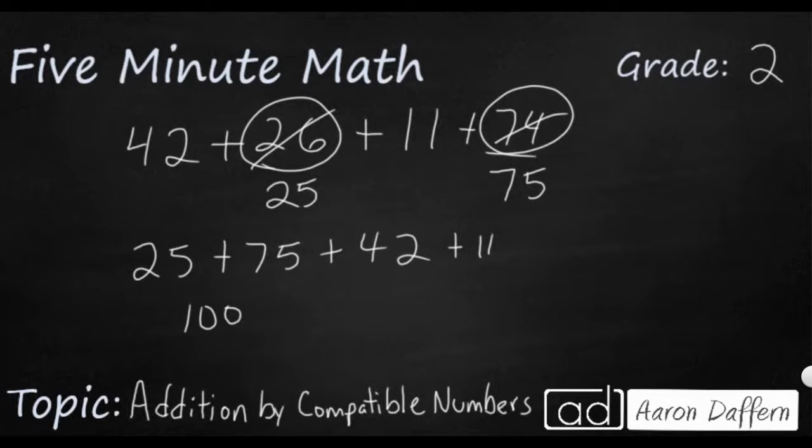But the nice thing is, if you take a look at the ones place, they're not going to be very much. So you can just add those like normal. So you can say 100 plus 42. We can add that. We can say 142. And then we can add the 11. So plus 11 is going to make 153.